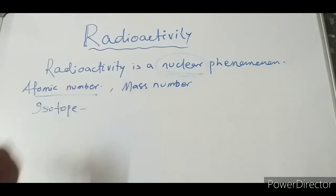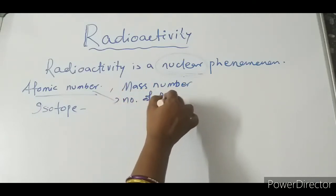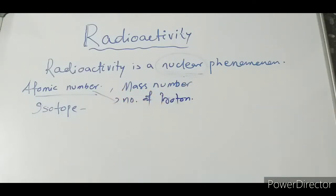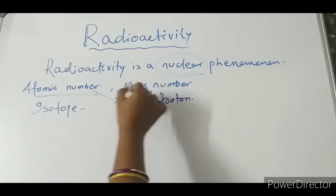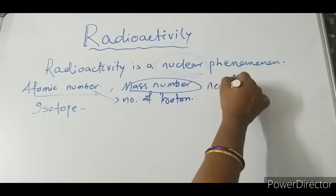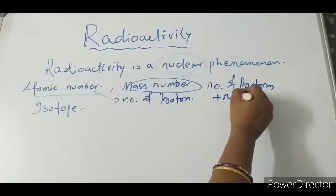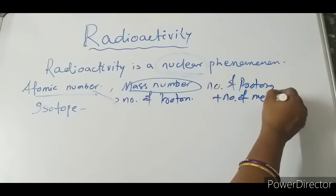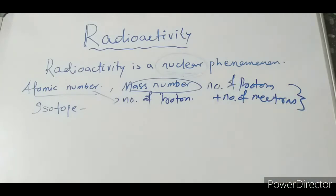First of all, let us go for atomic number. Atomic number is the number of protons. We know all these things. Mass number is nothing but the number of protons plus the number of neutrons. All together, these are known as nucleons.